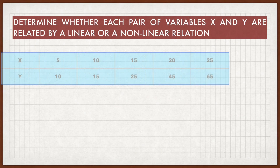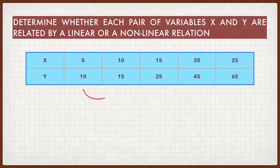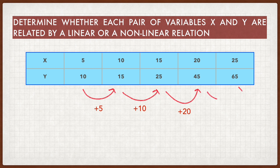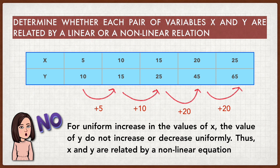Let's see another example. From the table, we can see that when x increases uniformly, the values of y increase too. But you can see that the values of y do not increase uniformly. Therefore, we can conclude that for a uniform increase in the values of x, the values of y do not increase or decrease uniformly. Thus, x and y are related by a non-linear equation.